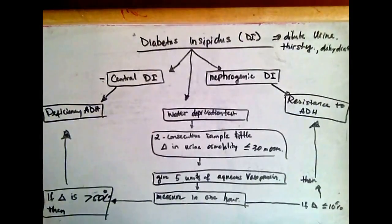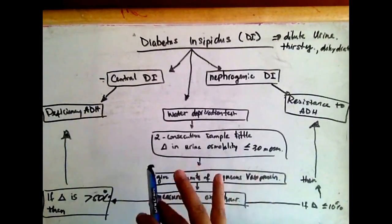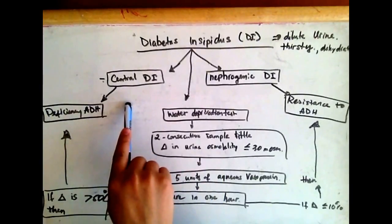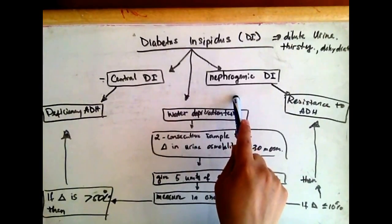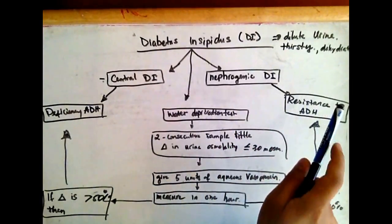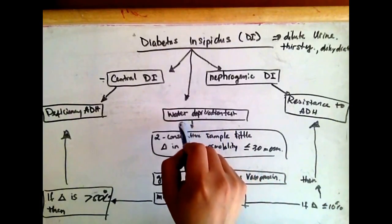What do we do to differentiate between central diabetes insipidus and nephrogenic diabetes insipidus? There's a test called the water deprivation test.